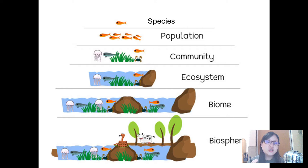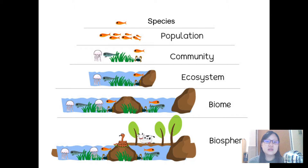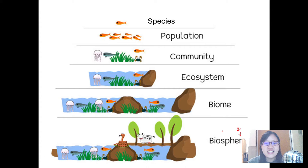Taman Negara is part of the Malaysian rainforest biome — it is part of the tropical rainforest biome. So multiple ecosystems make up a biome. How about multiple biomes? We have rainforests, temperate areas, places with four seasons — many, many different types of habitats and ecosystems in the world. The entire Earth has multiple biomes, and multiple biomes make up the biosphere. The biosphere is basically the entire Earth and all the biomes in it.